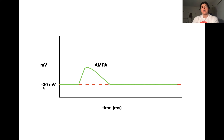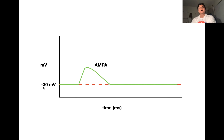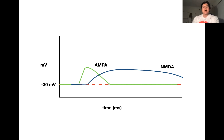The NMDA receptor also has a reversal potential of zero millivolts, so we would expect a similar result — that the inward current would decrease through the NMDA receptor and the level of depolarization would decrease as well. However, what we actually see in this experiment is contrary to our expectations: the net inward current through the NMDA receptor in this slightly depolarized cell is actually greater than when the cell was at rest. So what is going on here?